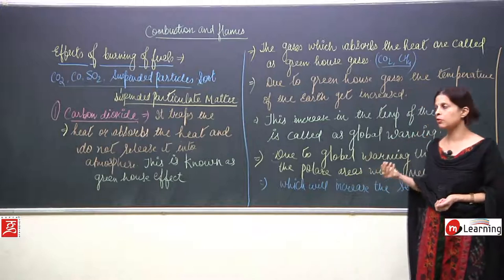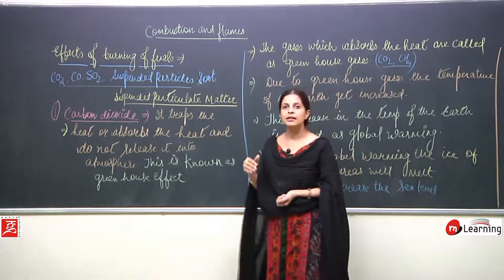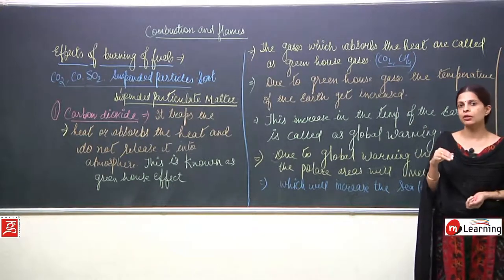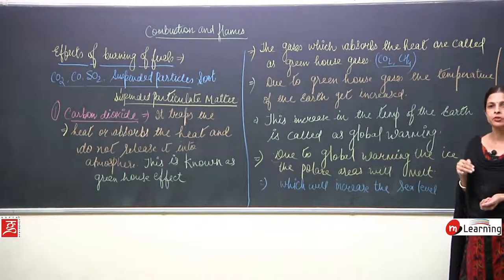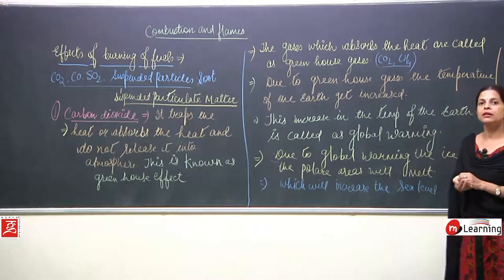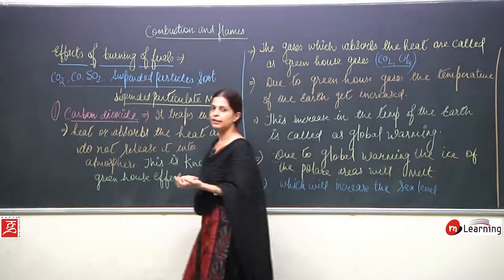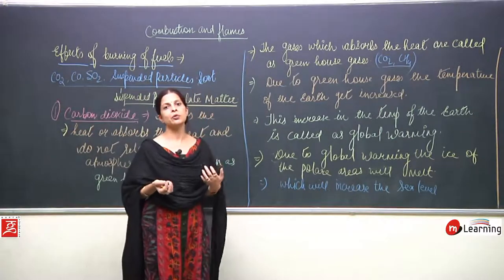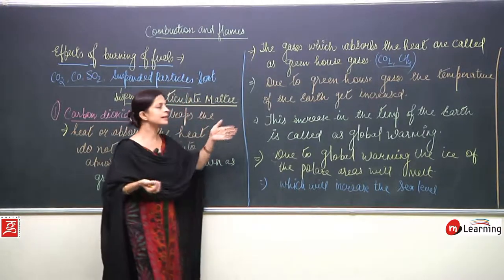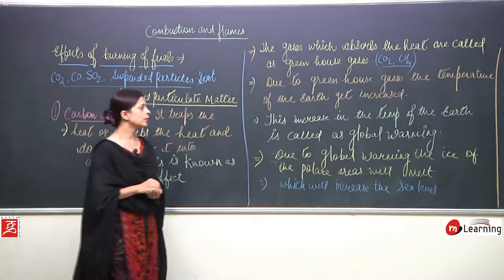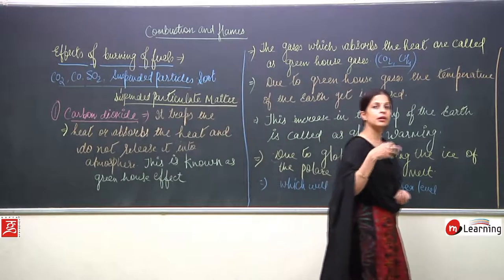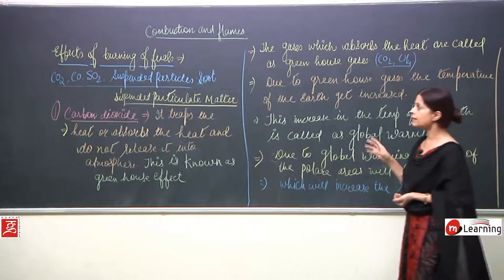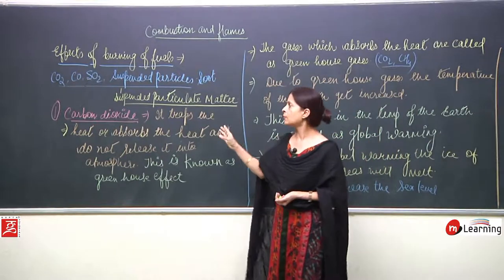When carbon dioxide becomes part of the atmosphere, it traps the heat and does not allow it to be released into the atmosphere, due to which the temperature of the earth increases. The gases responsible for trapping and absorbing heat are known as greenhouse gases, and this increase in temperature of the surface of the earth is known as global warming. Due to global warming, our existence will be in danger.